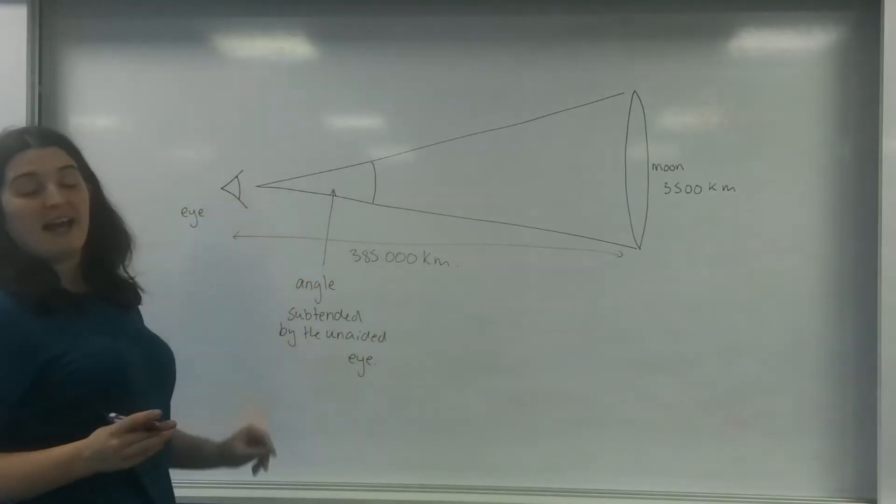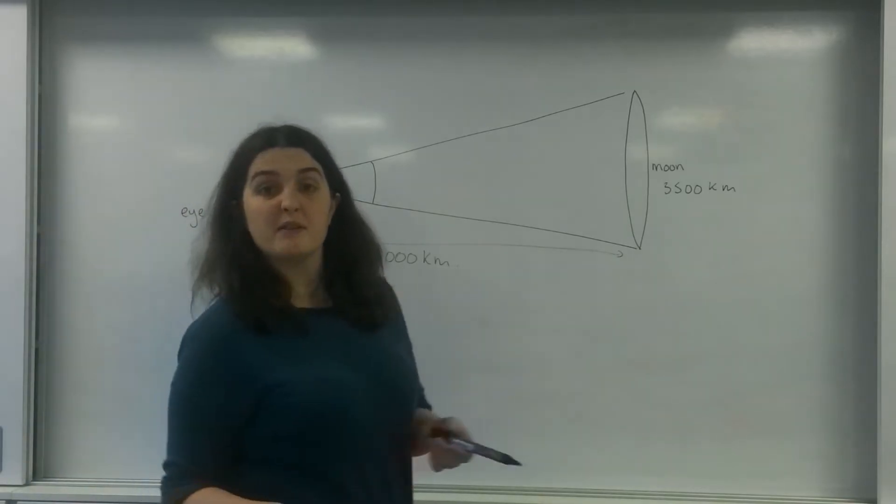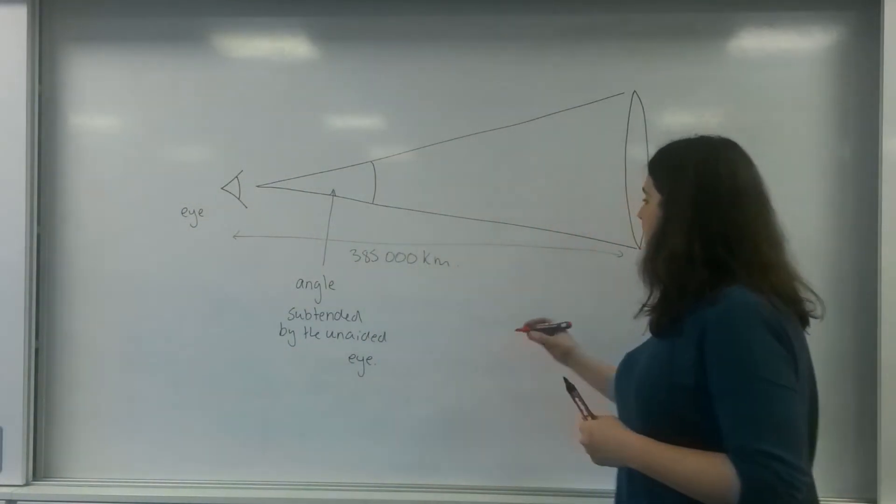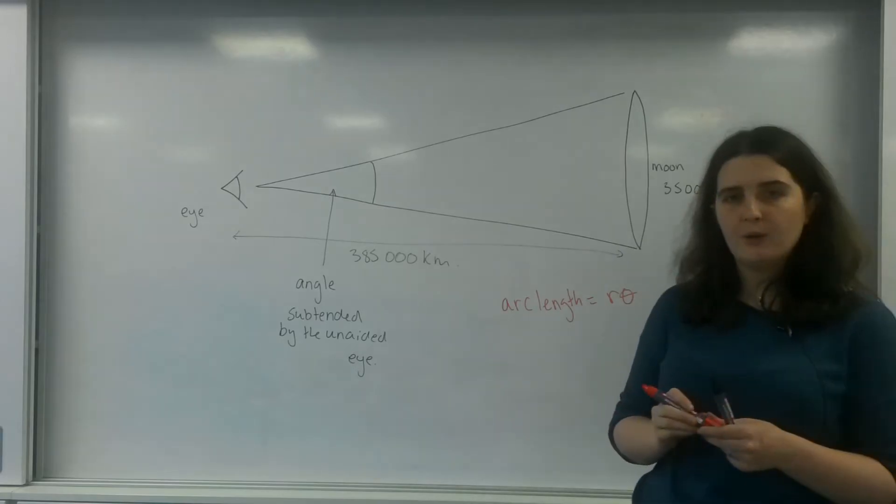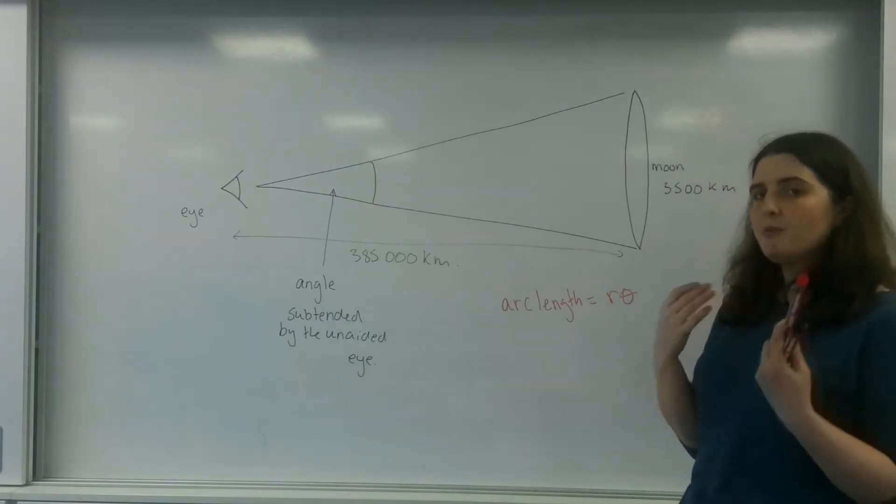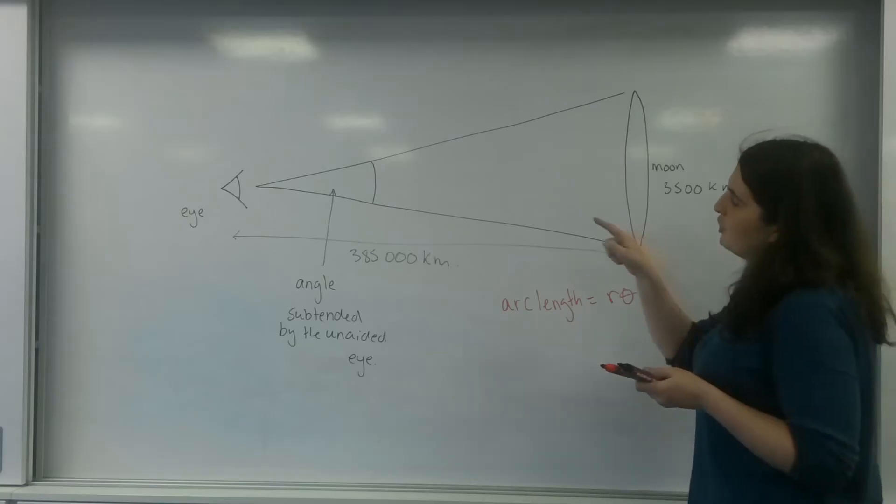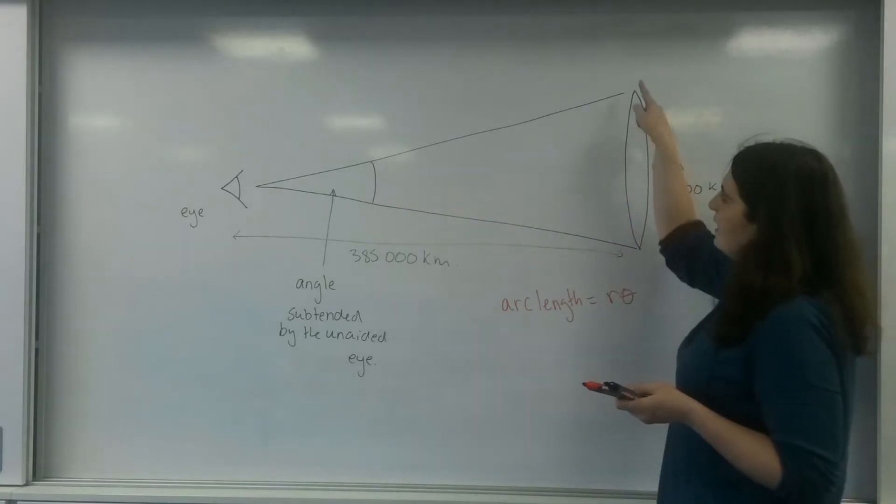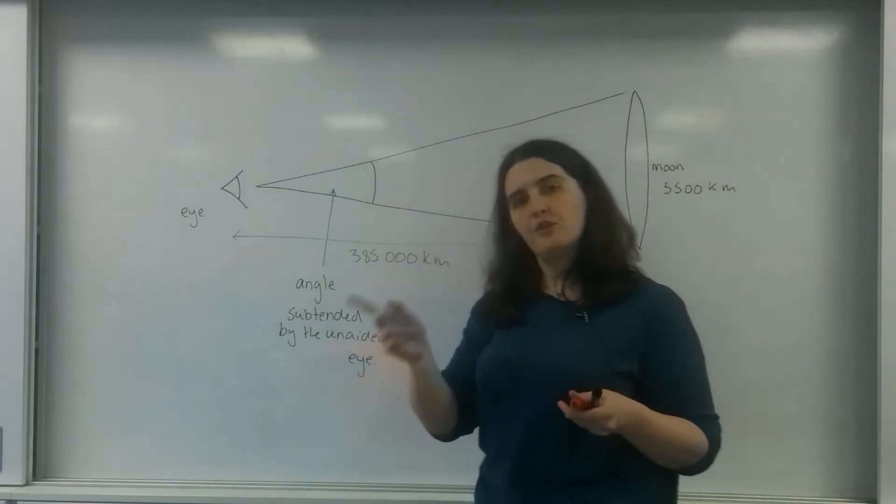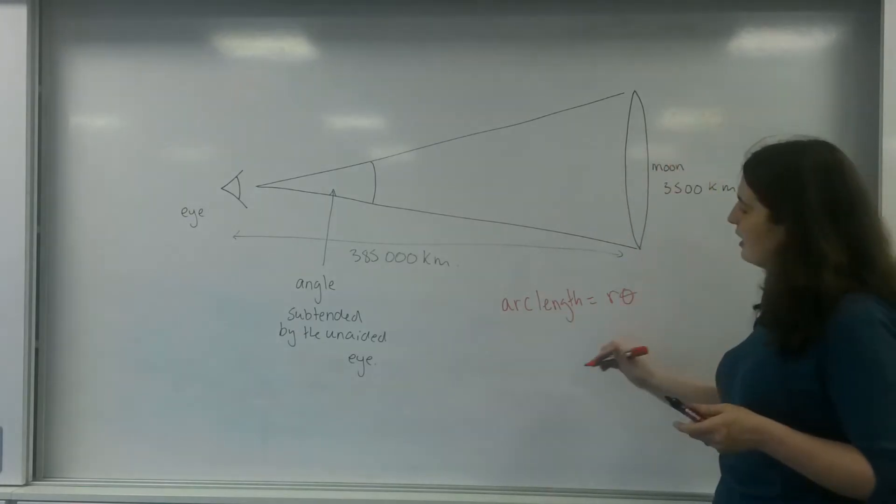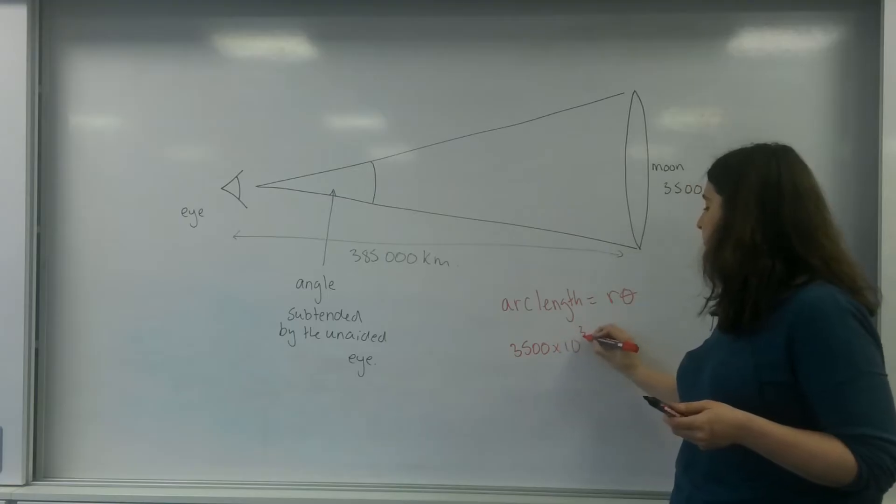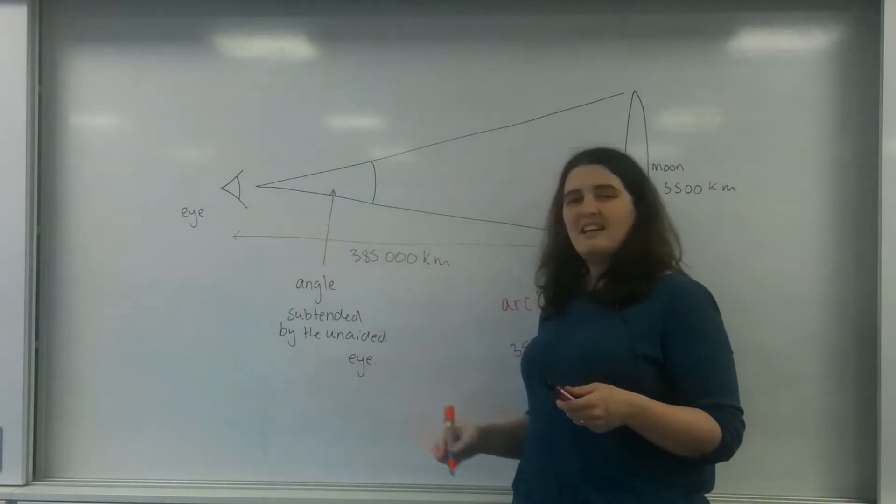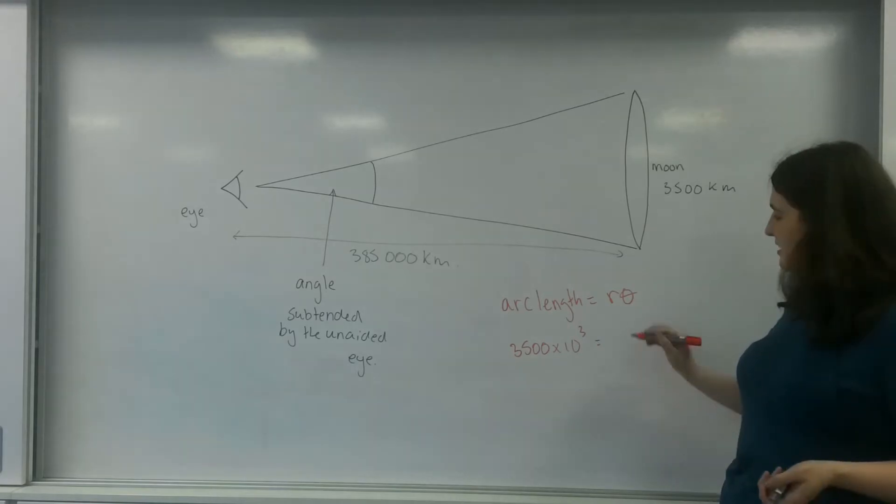And we actually can work out that angle by using something from maths. I'm going to talk about arc length here. So arc length is the radius times by the angle. And because we're going to be dealing with such tiny angles, I can assume that this section here is actually a small slither of a circle. So this here, this diameter is the arc length. So that's 3,500 times 10 to the 3. And the distance between here and here is going to be the radius.